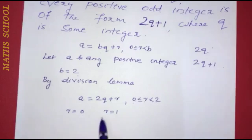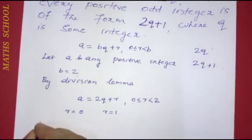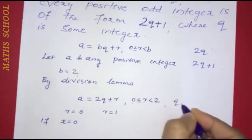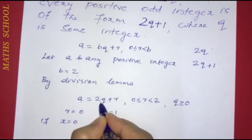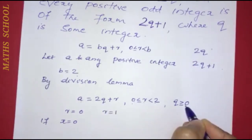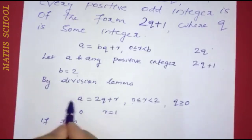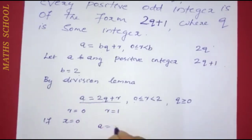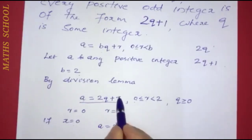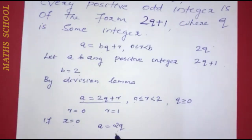Either r equals 0 or r equals 1. If r equals 0, then a equals 2q. So a is of the form 2q, which means a is an even positive integer.